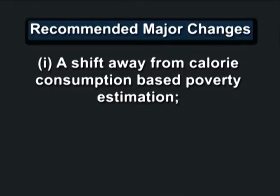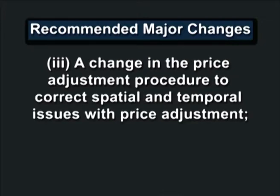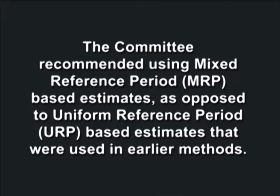The four major changes recommended were: first, a shift away from calorie consumption-based poverty estimation; second, a uniform poverty line basket across rural and urban India; third, a change in the price adjustment procedure to correct spatial and temporal issues; and fourth, incorporation of private expenditure on health and education while estimating poverty — a very important recommendation. The committee also recommended using mixed reference period (MRP) based estimates as opposed to uniform reference period (URP) based estimates used in earlier methods.